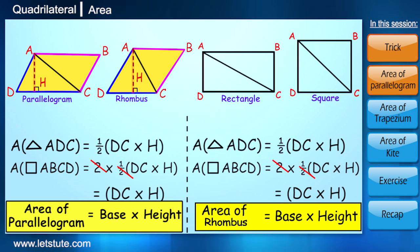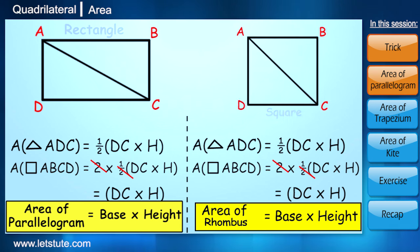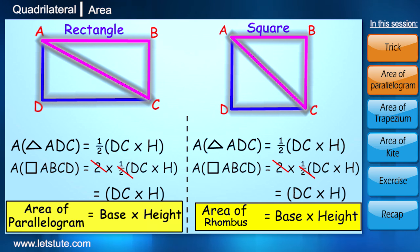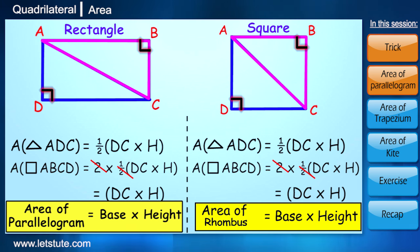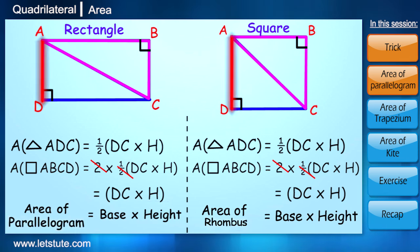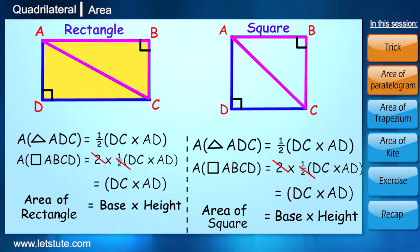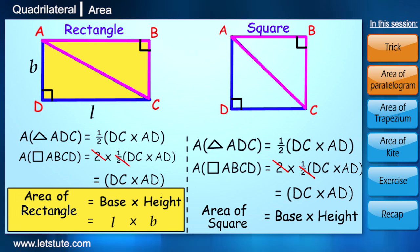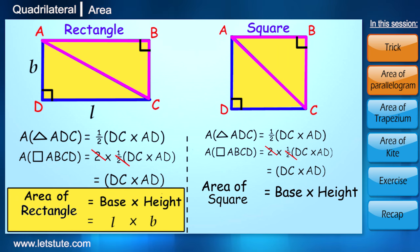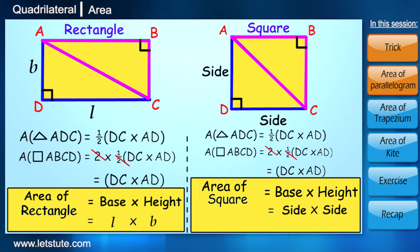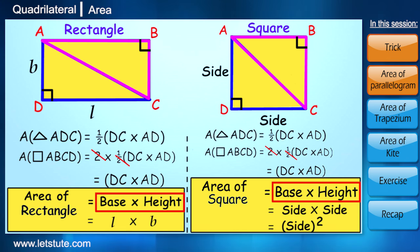The only difference is in rectangle and square we get two congruent right angle triangles. So height is AD or BC. So we say that area of rectangle is length into breadth, and that for a square it is calculated as side into side, that is side squared, because all its sides are equal. But the core idea behind all of this is base into height.